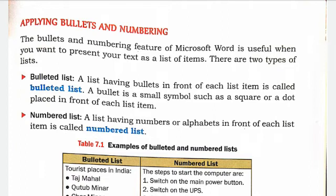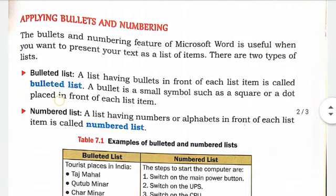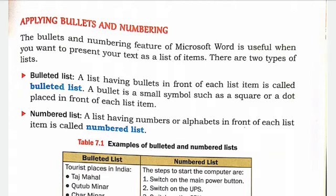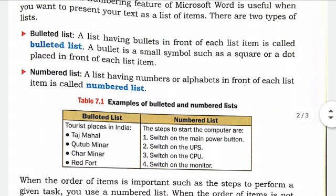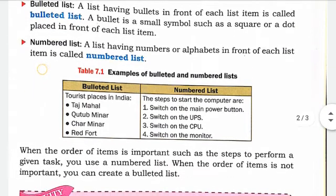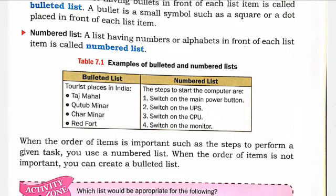A bulleted list is a list that has a bullet symbol in front of each list item. The bullet is a small symbol — typically a square or dot — placed in front of each list item. A numbered list displays items in numerical or alphabetical order. Table 7.1 shows examples of bulleted and numbered lists.